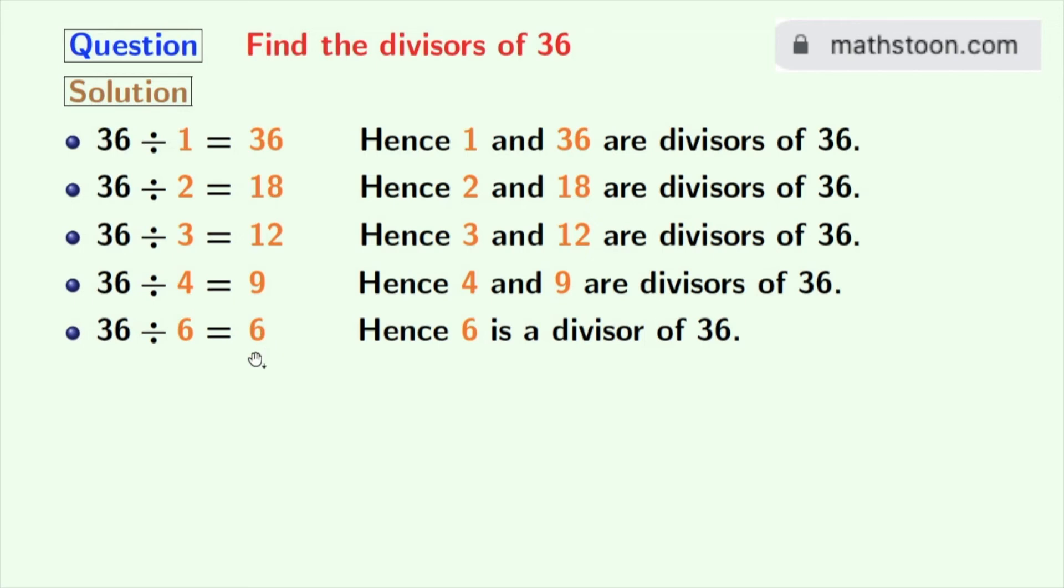Now look that we have all the divisors of 36 which are in orange colors. These are 1, 2, 3, 4, 6, 9, 12, 18 and 36.